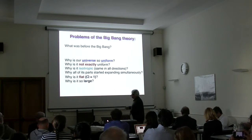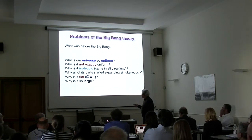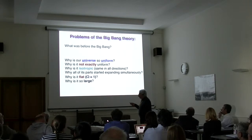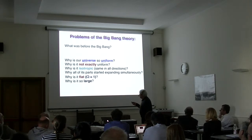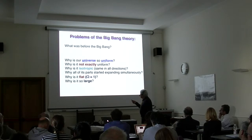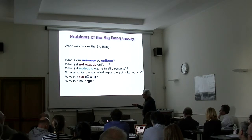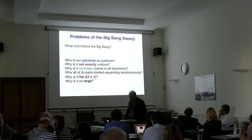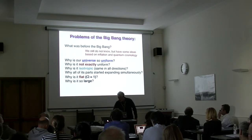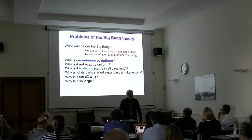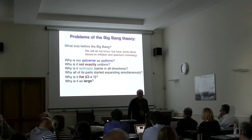One problem was: what was before the Big Bang? Why is our universe so uniform, yet not exactly uniform because galaxies exist? Why is it isotropic — the same in all directions? Why did all its parts start expanding at the same time, and why is it flat?